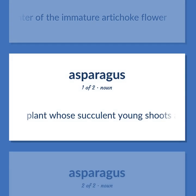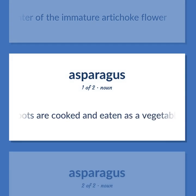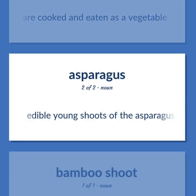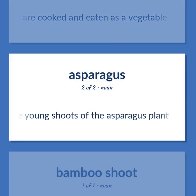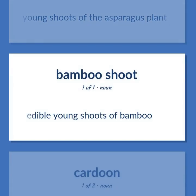Asparagus: A plant whose succulent young shoots are cooked and eaten as a vegetable — the edible young shoots of the asparagus plant. Bamboo shoot: Edible young shoots of bamboo.